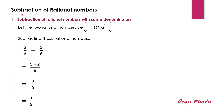Subtraction of rational numbers. We need to perform subtraction of rational numbers when the denominators are the same. Let us take the example of two rational numbers: 5 upon 6 and 2 upon 6. We proceed the same way as with addition of rational numbers with the same denominators — when denominators are the same, we take the common denominator and perform the operation only on the numerators. Taking the common denominator 6, we subtract 5 minus 2, which gives us 3 upon 6.